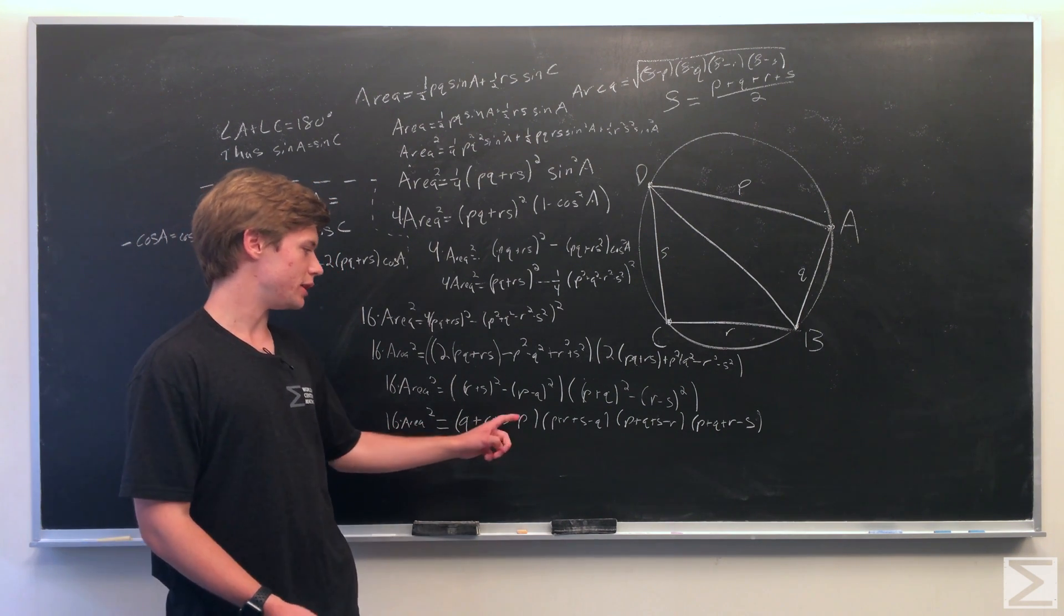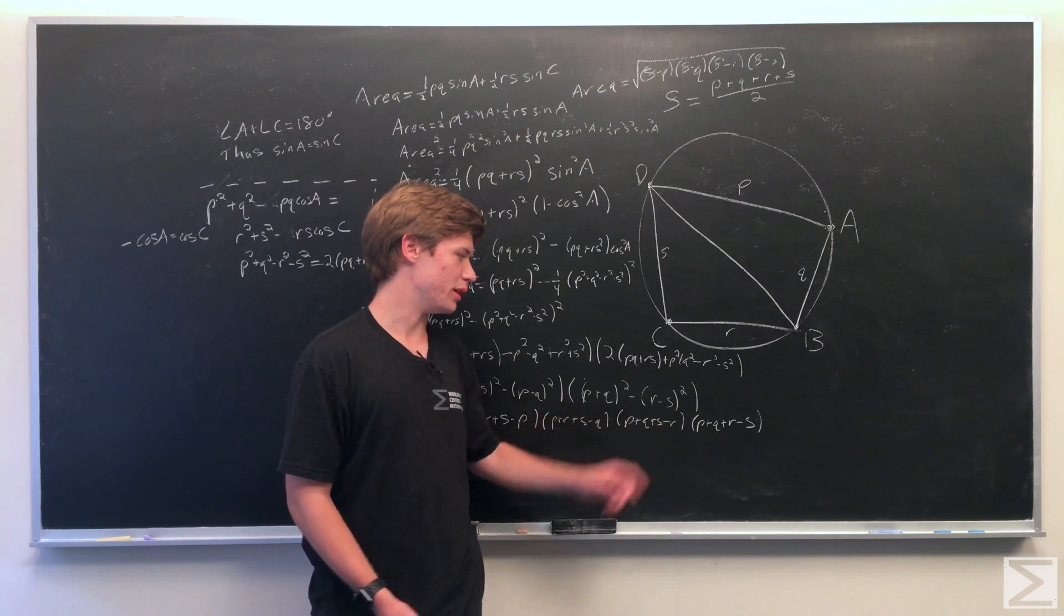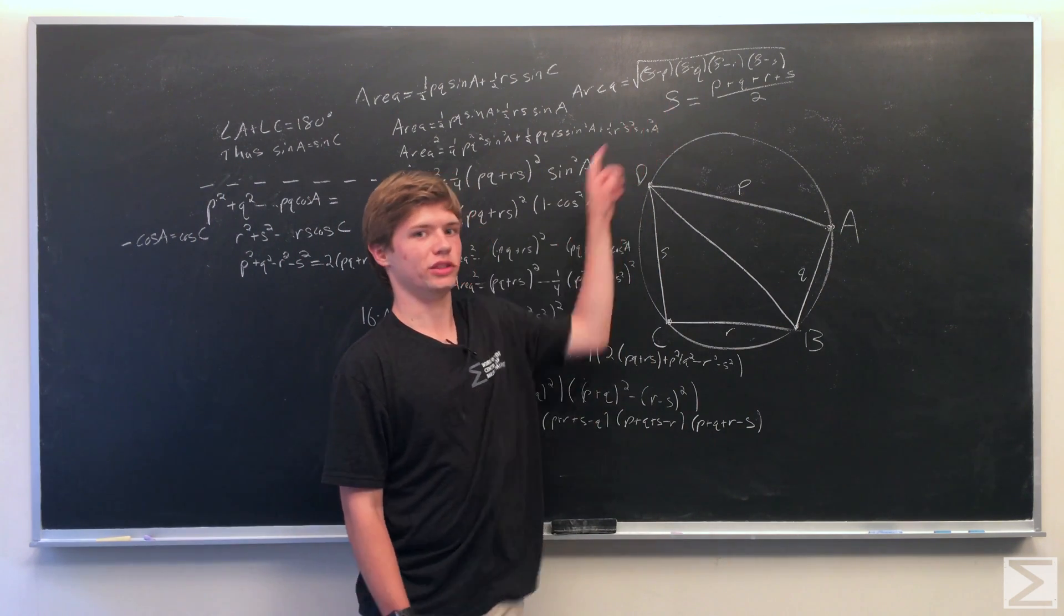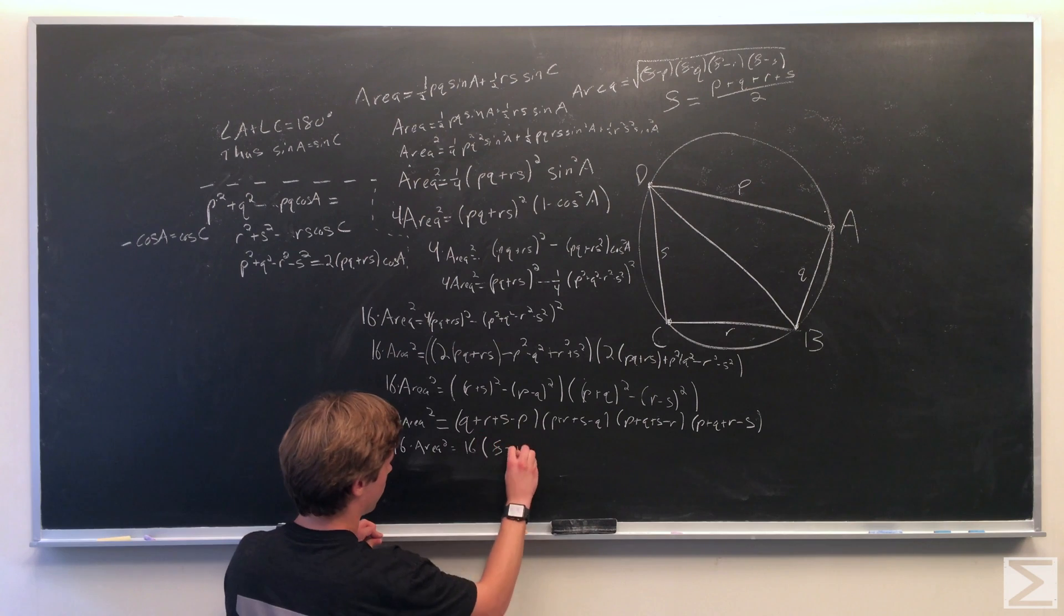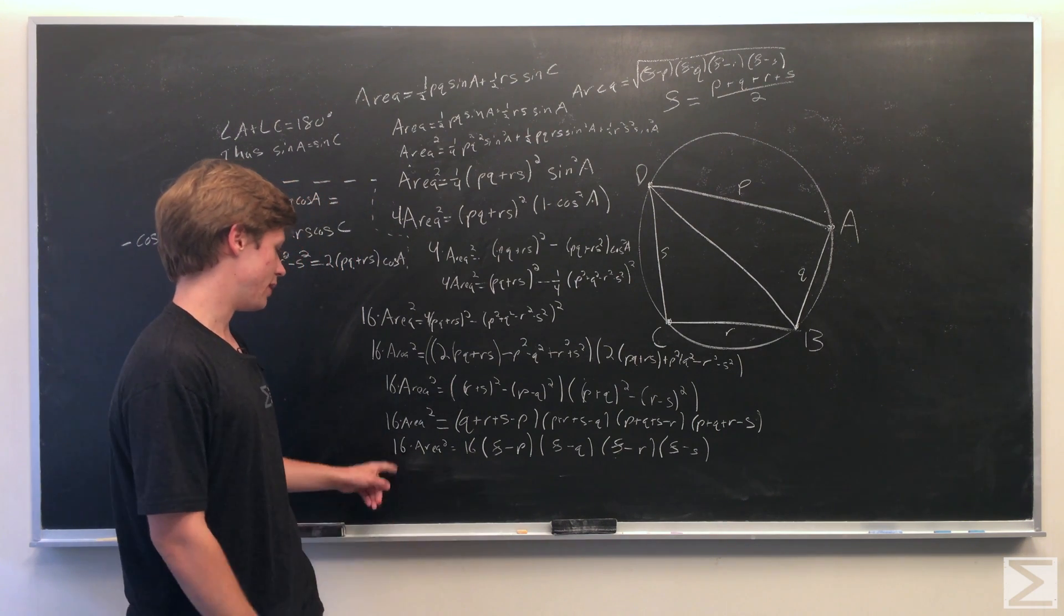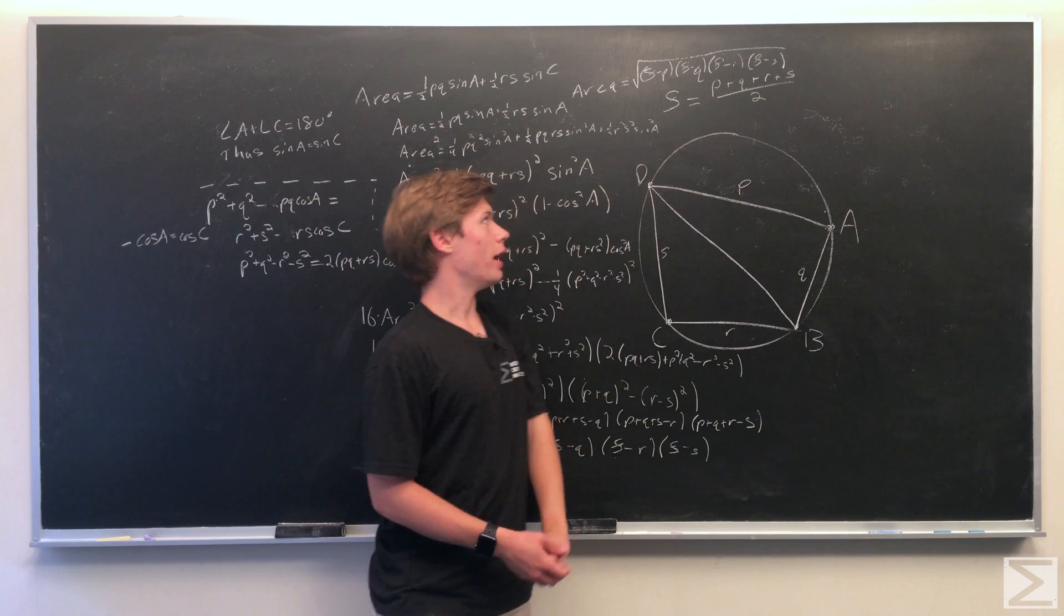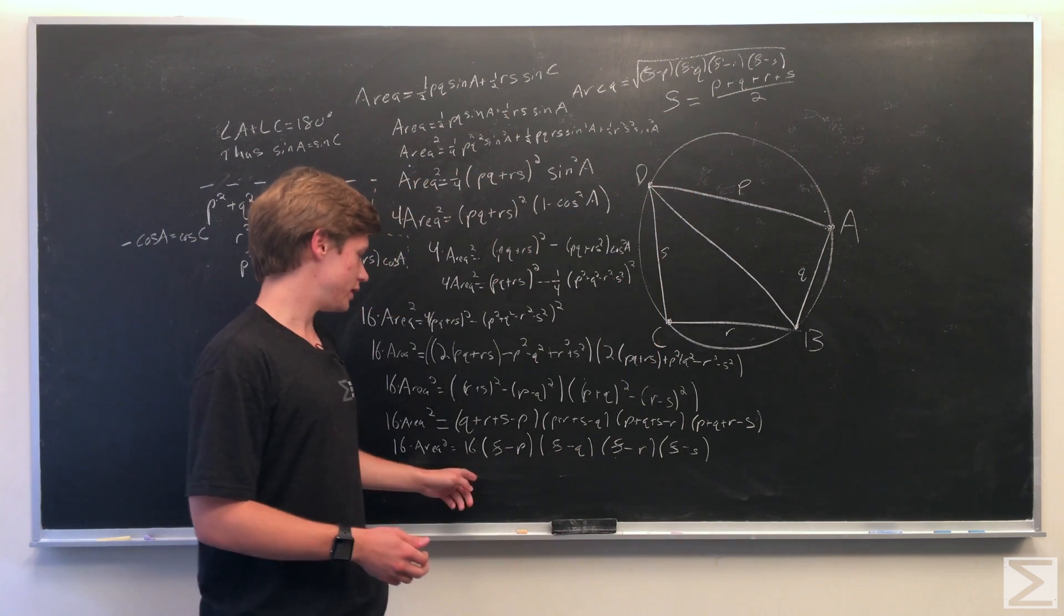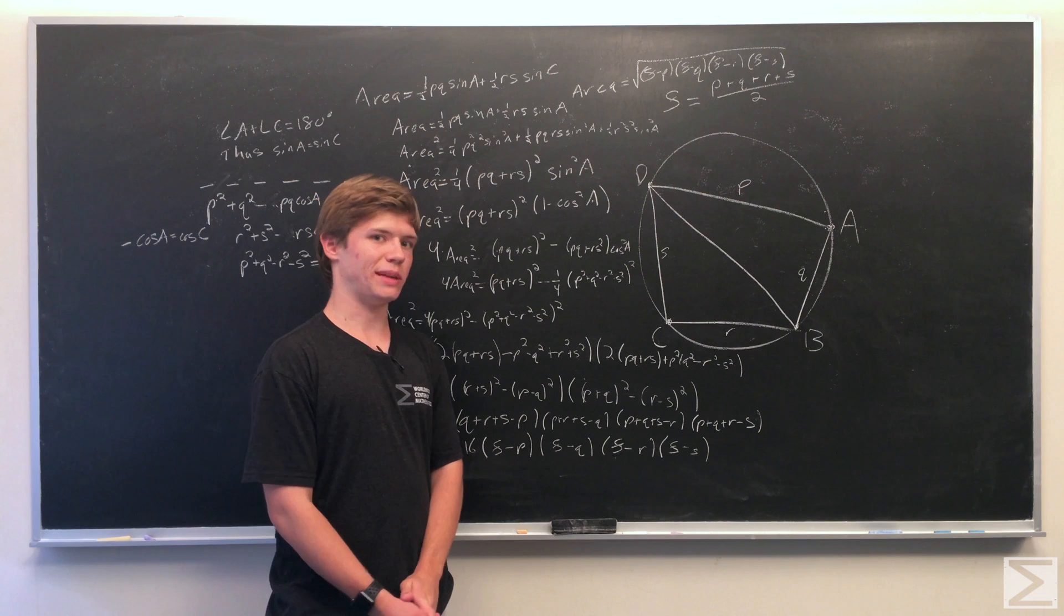That's what we did here. If you multiplied all this out, it would produce an expression that could be factored into this. So we have q plus r plus s minus p times p plus r plus s minus q times p plus q plus s minus r times p plus q plus r minus s. So now we can substitute in the semi-perimeter, which is just half the perimeter. As you can see, we're left with 16 times area squared equal to 16 times semi-perimeter minus p times semi-perimeter minus q times semi-perimeter minus r times semi-perimeter minus s.